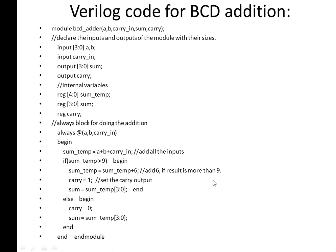That is the basic principle. So, module BCD adder: inputs are A, B, and carry in. Output is sum and carry. Inputs A and B are 4 bits, input carry is 1 bit, output sum is 4 bits, carry is 1 bit. There are also temporary variables. Now using always, at the sensitivity list of A, B, carry in - begin. sum_temp is equal to A plus B plus carry_in.